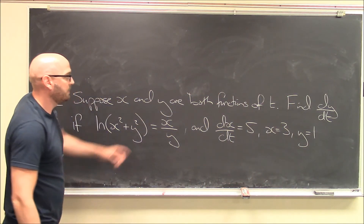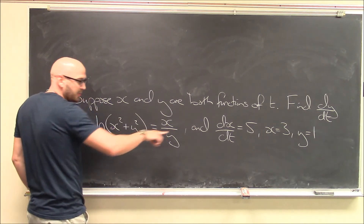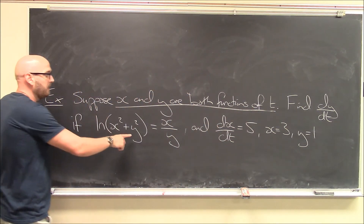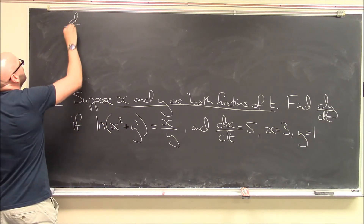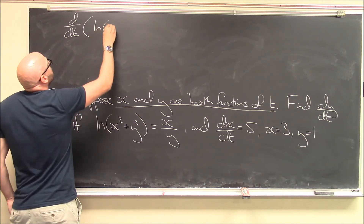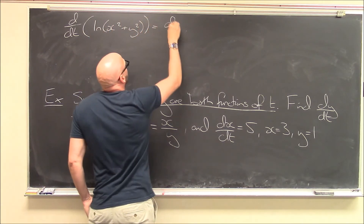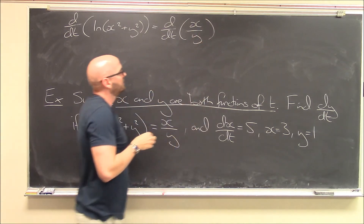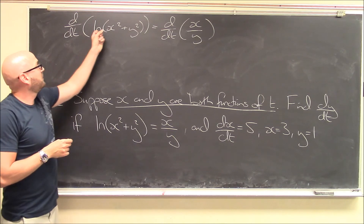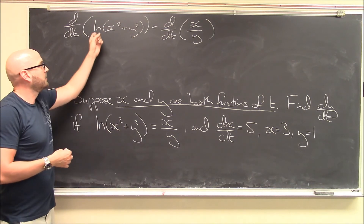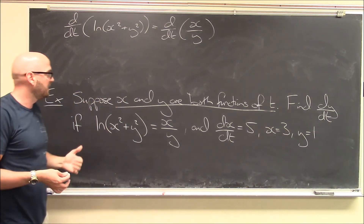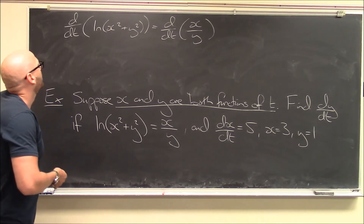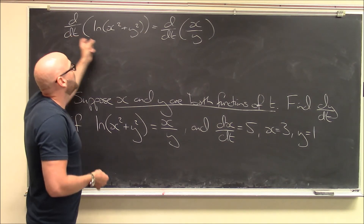We're told we want to find dy/dt. We have this relationship between x and y, and x and y are not independent variables — they're both functions of t. So to find dy/dt, I'm going to differentiate both sides with respect to t. By the way, since this involves a natural log, I would usually try to simplify using log rules before differentiating — that tends to make life easier. But log of a sum, I can't do anything with that. Logs of products I can break up, but not log of a sum.